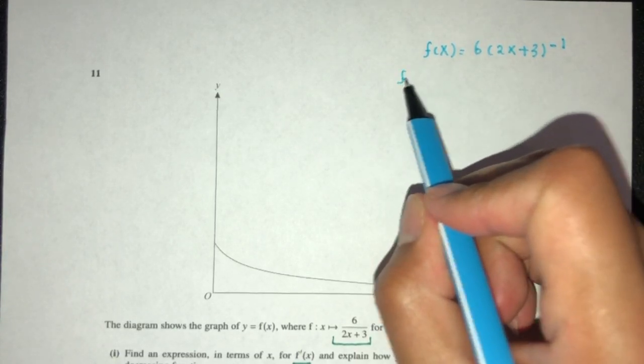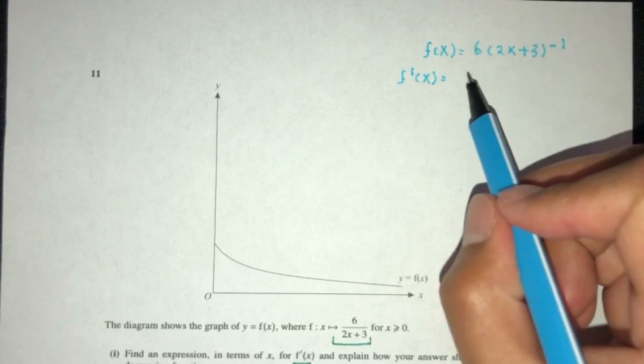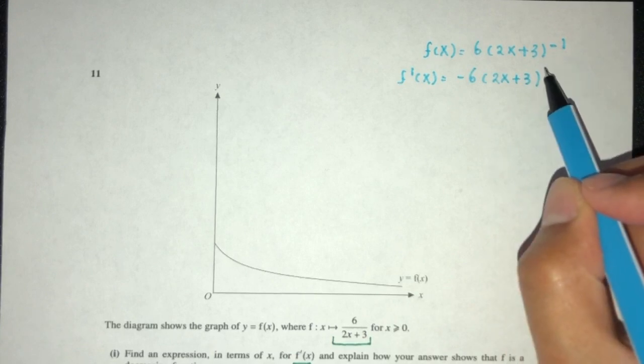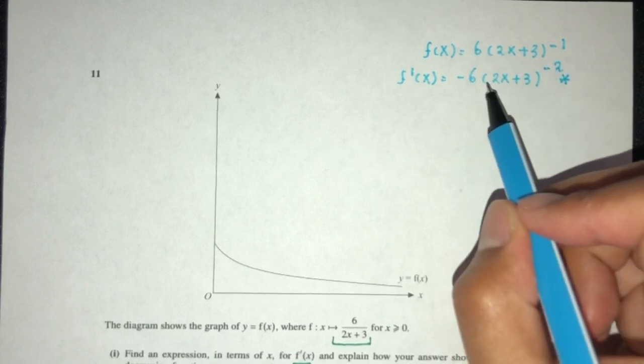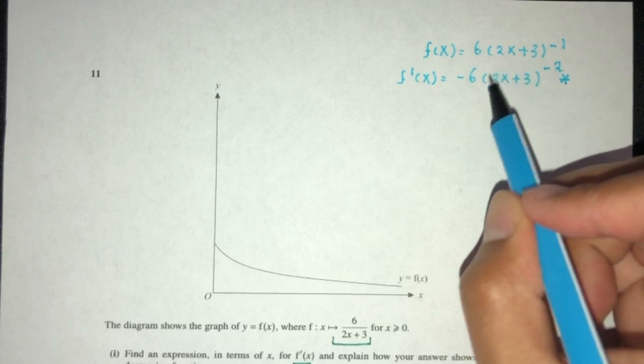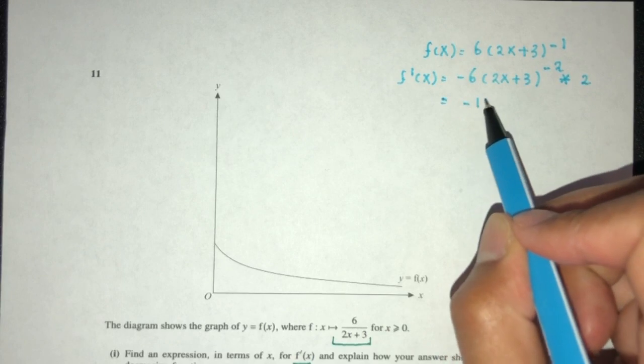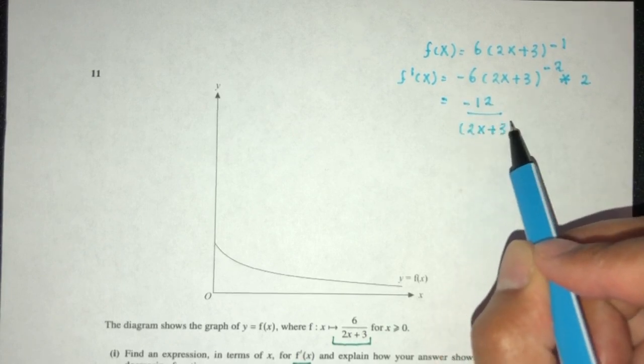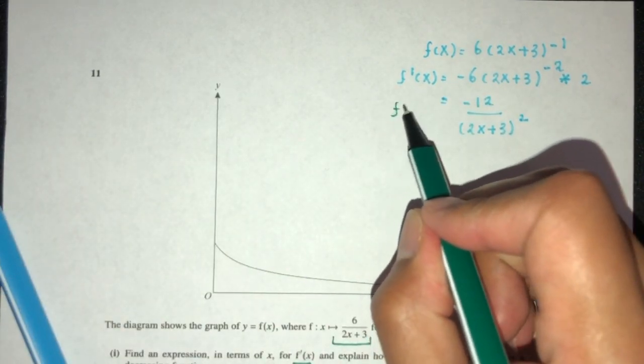Now we can differentiate to find f prime of x. First multiply by the power, that will be minus 6. Then we have 2x plus 3, and we decrease the power by 1, that should be minus 2. Then multiply by the derivative of the inside, which is 2. So we have minus 12 over (2x plus 3) squared. This is your value of f prime of x.